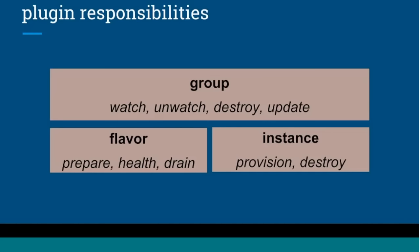With a group, you have roughly CRUD operations, but we've called create 'watch' and destroy 'unwatch' — watch and unwatch are basically how you attach and detach the scaling group itself. Groups do have an update, which is a rolling update. Flavors are responsible for preparing software — they have an opportunity to modify behavior or the setup shellcode run on an instance. For service updates, we have health checks and drain. This allows updates in a safe way with a feedback loop: for example, the swarm flavor can report back whether a given instance is healthy and has successfully joined the swarm.